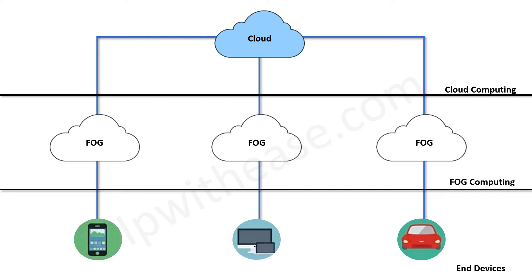Therefore, we can call fog computing as a decentralized computing structure located between the cloud and devices producing the data. Currently, fog computing is establishing its foundation and its market is expected to be worth 6.4 billion dollars in coming years. We can call fog as the sum of cloud and IoT.